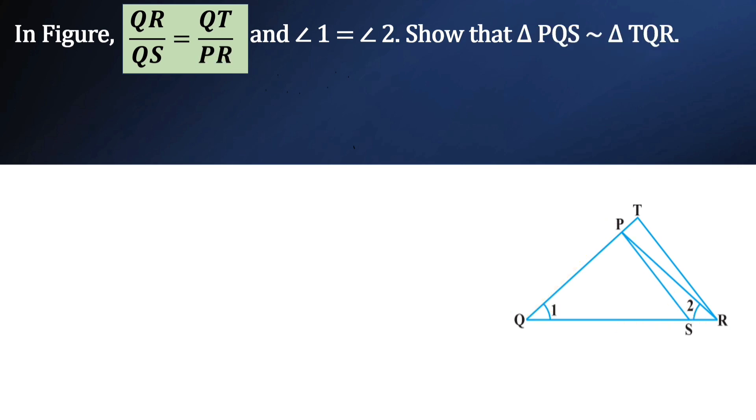Now let us see where PR is. Here is PR. It is in triangle TQR. In triangle TQR, it is given that angle 1 is equal to angle 2 here.